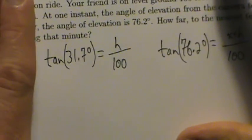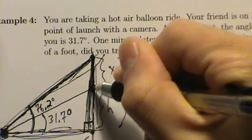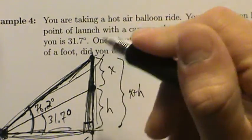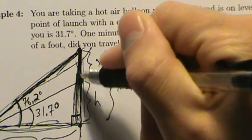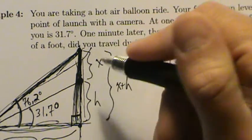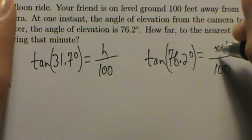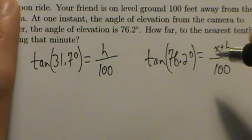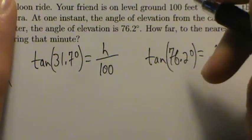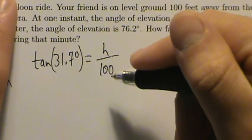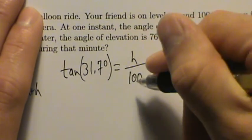We're solving for X — that's how far we traveled in that minute, from the first balloon position to the second. We have two equations with two unknowns, X and H. The first equation doesn't have X in it, so we can solve for H there and substitute into the second equation.